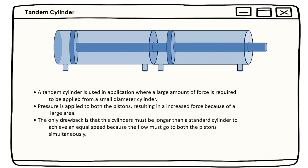Now the tandem cylinder. A tandem cylinder is used in applications where a large amount of force is required to be applied for a small diameter cylinder. Pressure is applied to both pistons resulting in increased force because of the large area. The only drawback is that this cylinder must be longer than a standard cylinder to achieve equal speed because the flow must go to both pistons simultaneously.